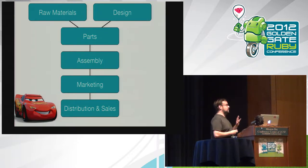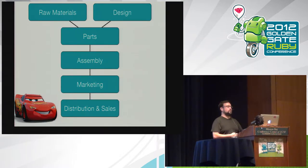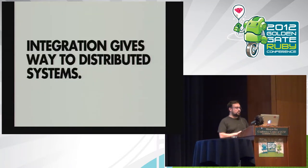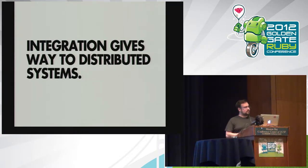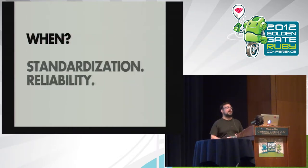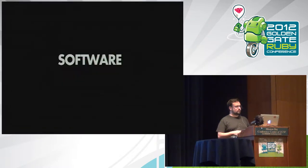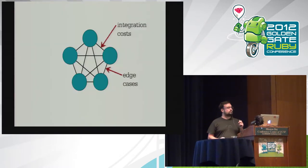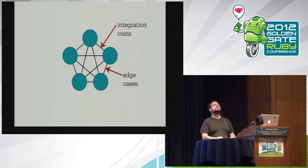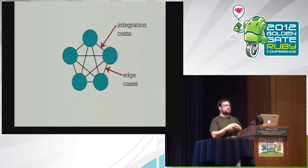Vertical integration really won early on in the process of building cars because of the transaction tax idea. When you're not really sure what's happening in between all the pieces of the puzzle, there's a high tax communicating between all the different pieces of the supply chain. So don't pay the tax, just do it yourself. You don't have to worry about standardizing things or figuring out how the parts guy is going to talk to the assembly guy. You have the Ford-specific version of that. But over time, vertical integration does give way to distributed systems — this happens in economics. When does that happen? In response to more standardized ways of thinking and a more reliable supply chain.